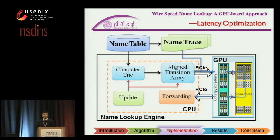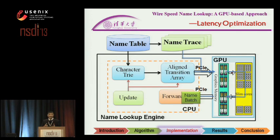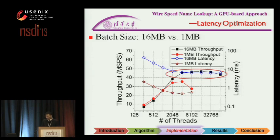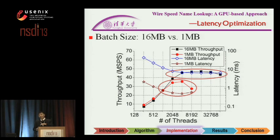We want to optimize two parameters. The first is latency. When using GPU, we typically use batched data to feed the GPU — but this brings extended latency. We want to minimize latency from the PC to the GPU across the PCIe bus. A larger batch size achieves highest throughput, but also increases latency. A small batch size reduces latency but throughput drops accordingly. We want high throughput while achieving small latency.